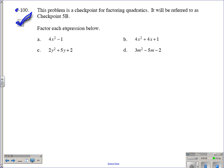We've got problem 5-100, this is a checkpoint problem for factoring quadratics. It will be referred to as checkpoint 5B. Remember the checkpoint problems are all referred to in the back of the book, there's additional practice problems with answers included if you need to do extra practice on the skill. So factor each expression below, letter a.